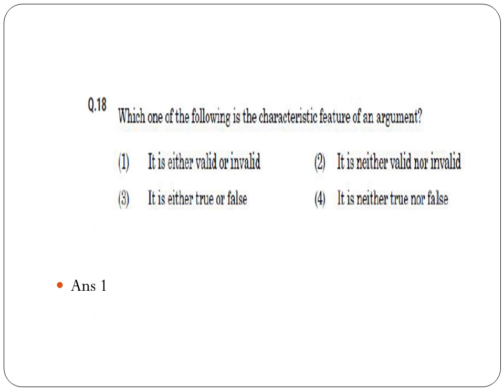Question 18: Which of the following is a characteristic feature of an argument? Argument is either valid or invalid. It is neither valid nor invalid. It is either true or false. It is neither true nor false. An argument can be either valid or invalid — that is the answer.